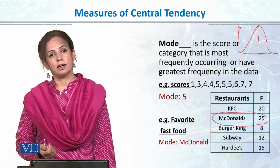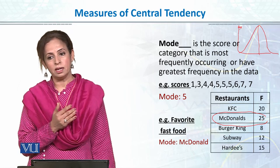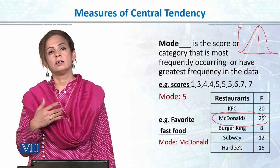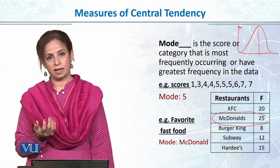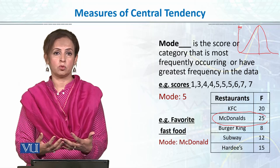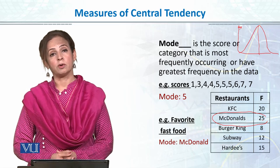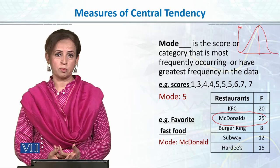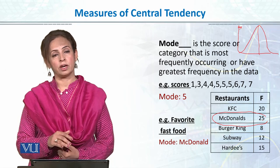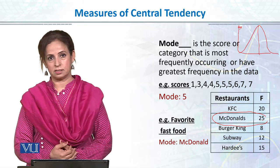Mode humare kaafi saari situations mein useful hota hai. For example, agar I am a dress designer and I have to launch a winter collection for next month, toh maybe I can do a quick survey ke kaunse colors young girls will prefer for December and January. So jo modal color hoga — jise majority log pasand karenge — maybe I will focus on that color more, so people get what they like. For grouped data there is also a formula for mode, but I prefer to calculate it in SPSS. But you should understand when, where, and why we should prefer one central tendency measure over other measures — which we will discuss in the next module.